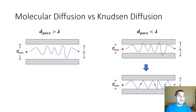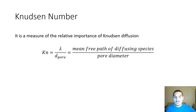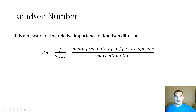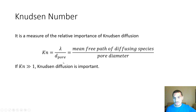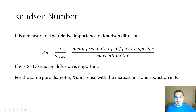To determine which type of diffusion is more dominant, there is a parameter called the Knudsen number, defined as lambda divided by the pore diameter D. If lambda is very large compared to the pore diameter, then Knudsen diffusion dominates. For large values of the Knudsen number, Knudsen diffusion is important. As temperature increases, lambda increases and the Knudsen number increases. As pressure increases, lambda decreases and the Knudsen number decreases.